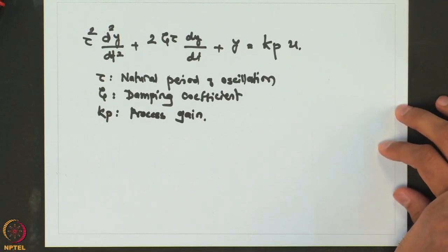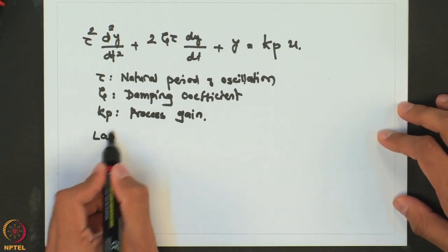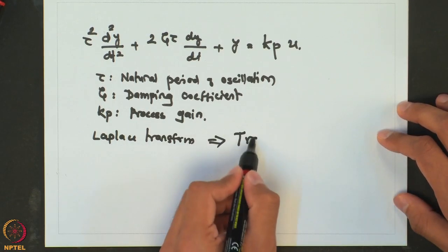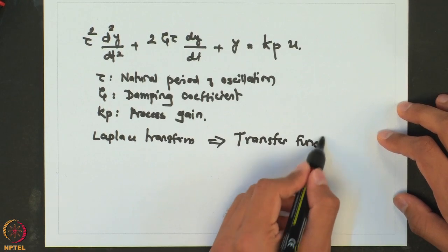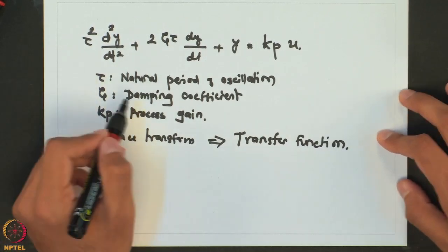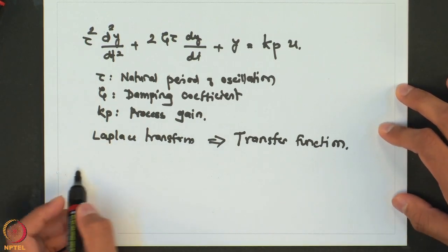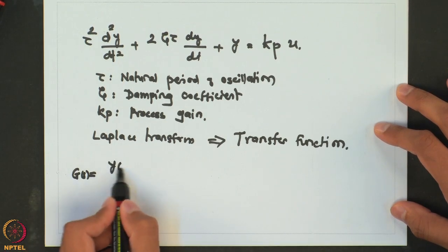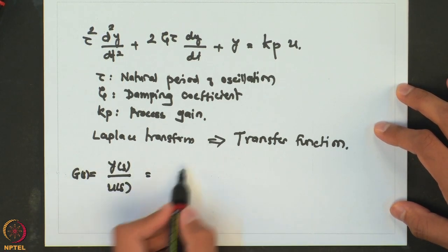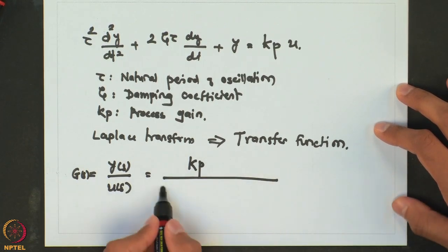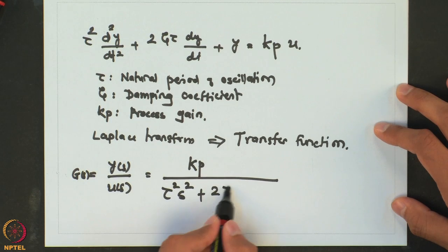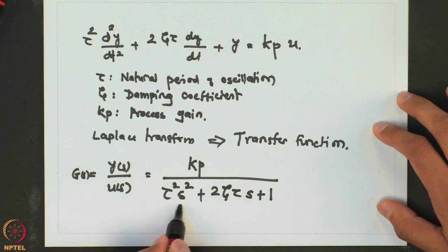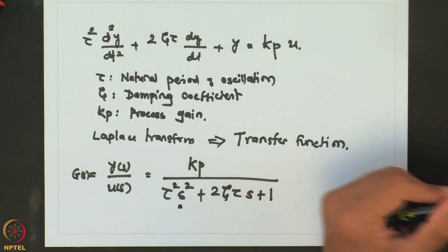Like first order systems, we take the Laplace transform to get the transfer function for the second order process. Taking the Laplace of the standard equation and writing it in transfer function notation gives: G(s) = Y(s)/U(s) = Kp / (τ²s² + 2ζτs + 1). This is second order — a quadratic in terms of the Laplace variable s.